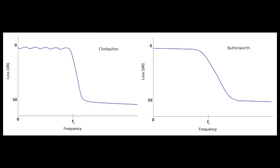The good part about the Gaussian transfer function is that it's very flat for group delay and phase response in the pass band region. So even though the cutoff from the pass band to the stop band is not very abrupt, the benefit of having very flat group delay can be very good for some filters.